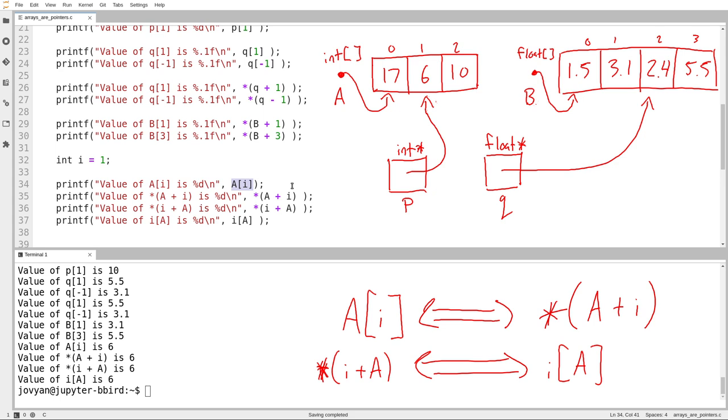But really, deep down, all C does when you allocate an array is it gives you a chunk of storage and it gives you a pointer to it. And all of the operations that we have been doing that involve arrays have secretly just been pointer operations all along.